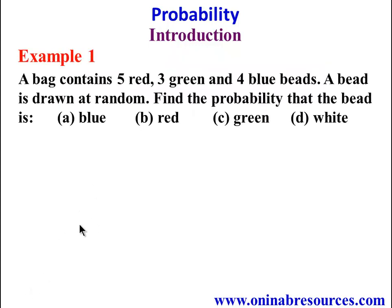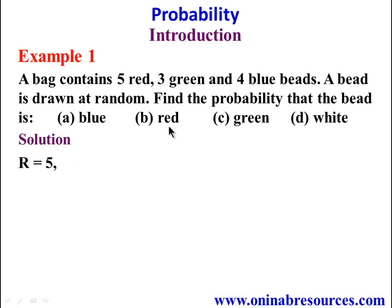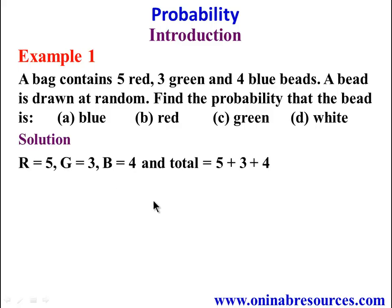We now solve some problems. Example 1: A bag contains 5 red, 3 green, and 4 blue beads. A bead is drawn at random. Find the probability that the bead is A) blue, B) red, C) green, D) white. In our solution, the number of red beads is 5, green beads is 3, blue beads is 4, and the total number of beads is 5 + 3 + 4 = 12.